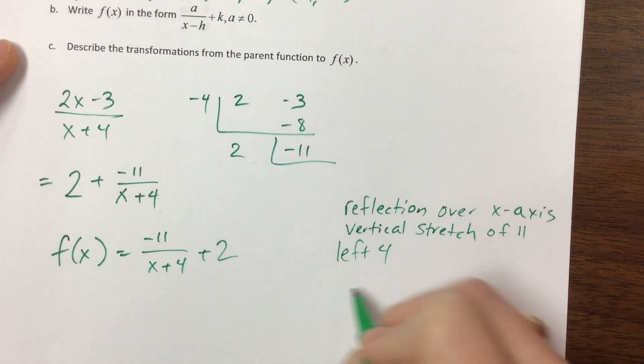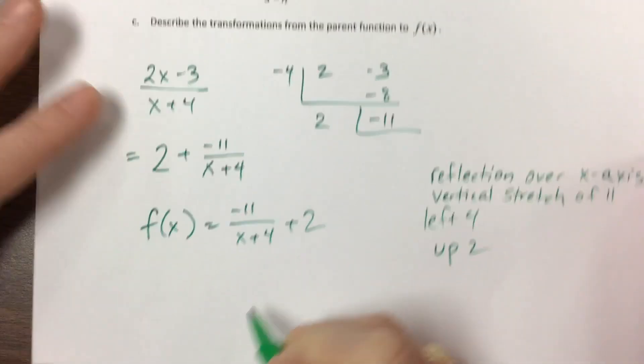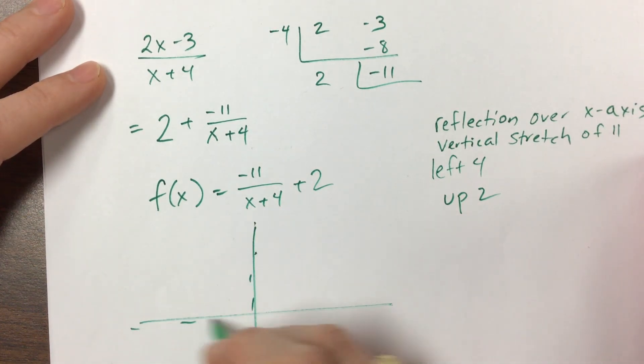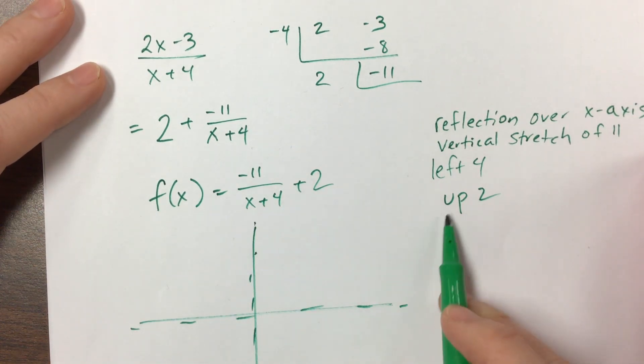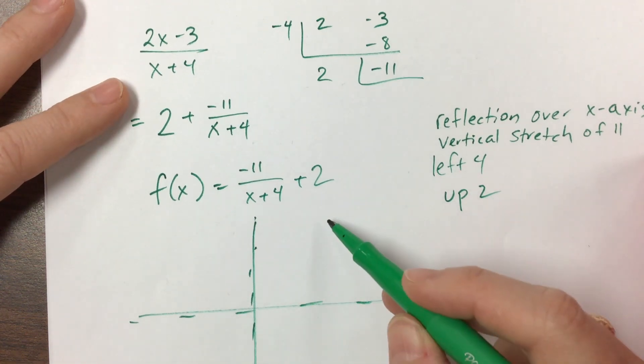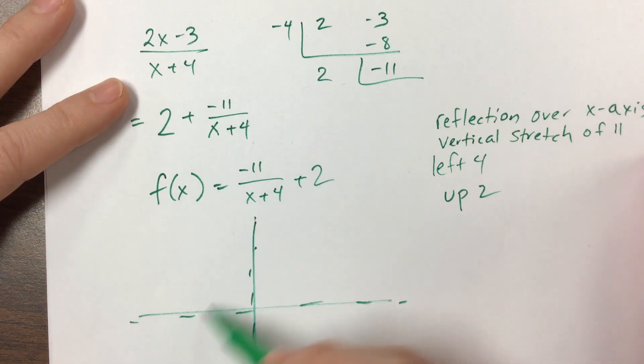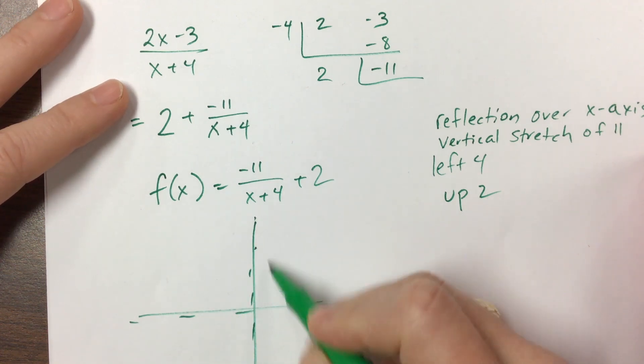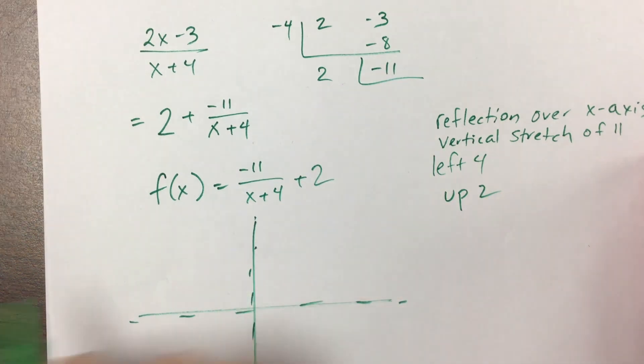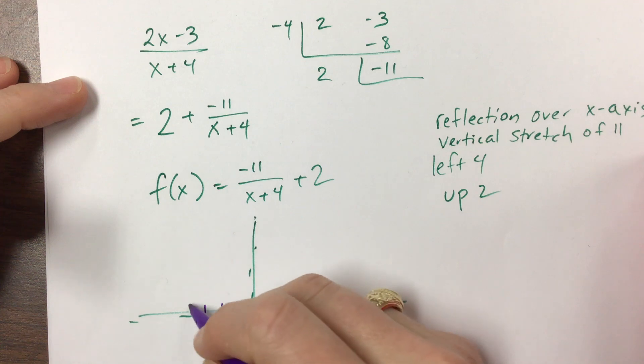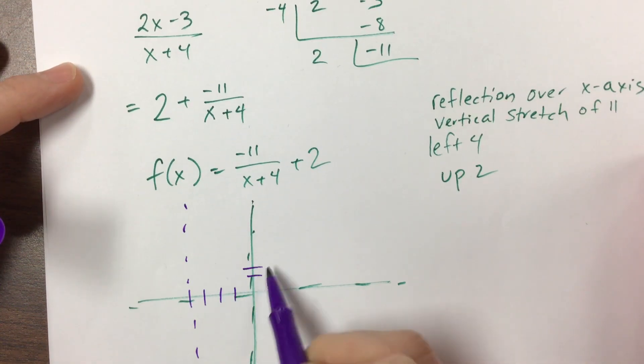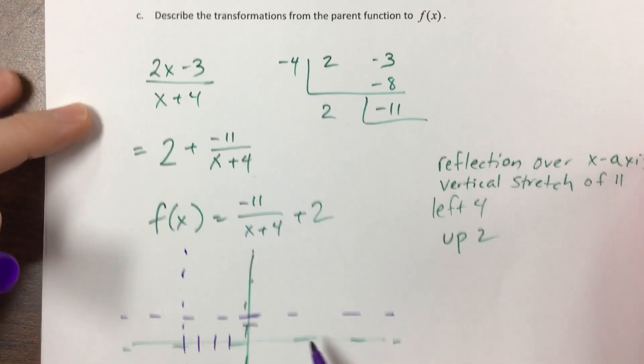And then we said we went left 4 and up 2. So if we think about our parent function, had an asymptote and an asymptote, and now we've gone, instead of being in quadrants 1 and in quadrant 3, we've now reflected we're in quadrants 4 and 2. And then we had a vertical stretch, so instead of 1, 1, everything kind of gets pulled farther away. Then we went left 4, so 1, 2, 3, 4. And then we went up 2, 1, 2.